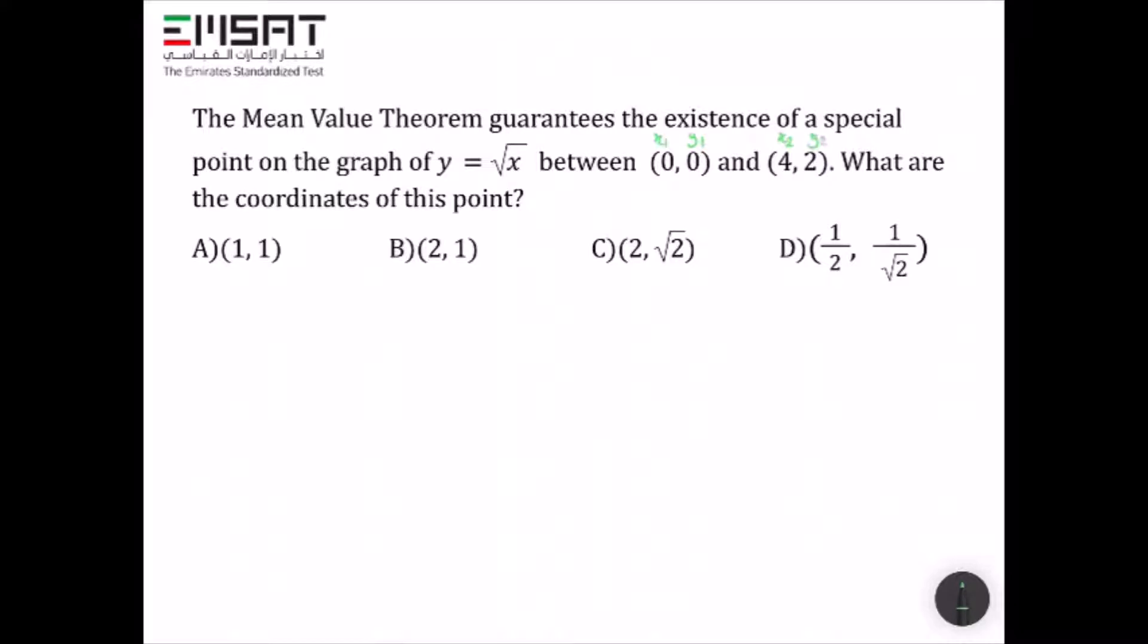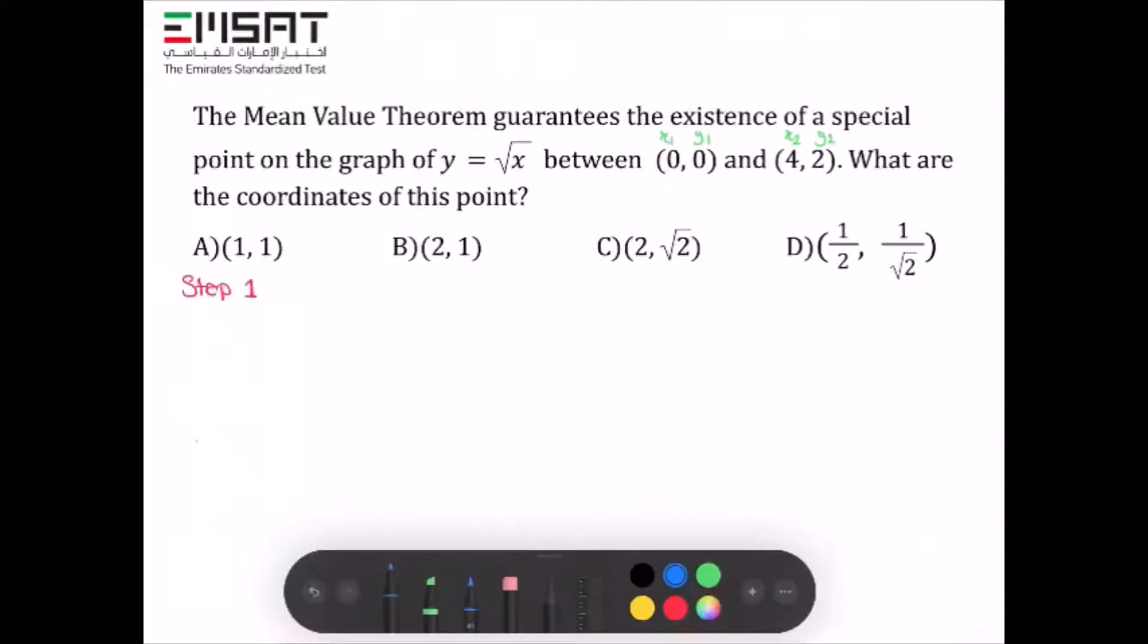What are the coordinates of this point? Step 1: When given two points, find the slope of the secant line using the formula m = (y₂ - y₁) / (x₂ - x₁).